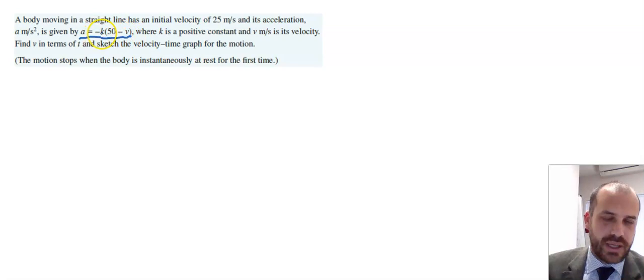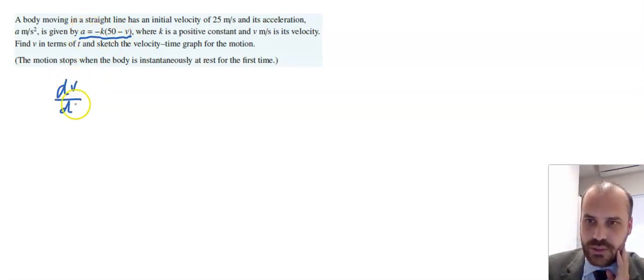Negative k, where k is a constant, (50 minus v), where v is the velocity. Now, traditionally, you're used to having acceleration functions where t is our variable here. But instead, we've got this v as our variable here. But obviously, we can still work with it.